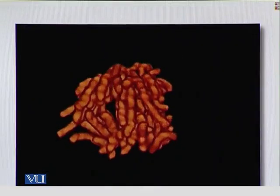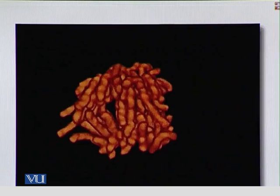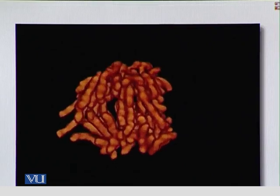Now let us look at the animation. Here are the chromosomes. These chromosomes will be split into two identical sets. We started with one set of chromosomes; the chromosomes divided in the S phase, which is when DNA replication takes place. In the process of mitosis, the replicated DNA is divided into the two daughter cells.